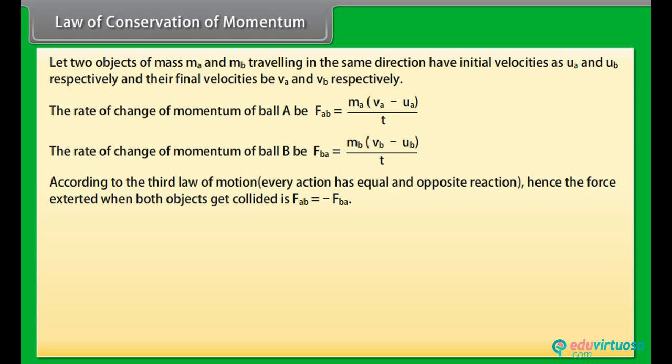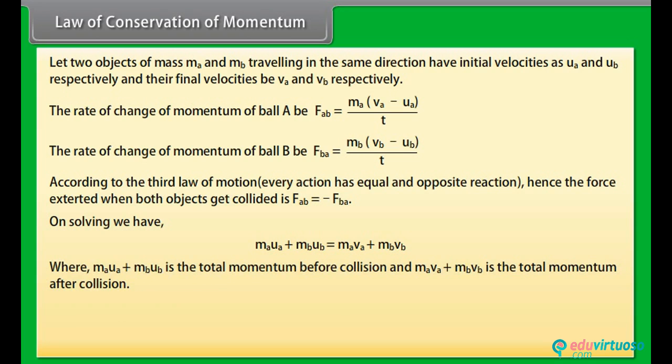According to the third law of motion, every action has equal and opposite reaction. Hence the force exerted when both objects get coiled is Fab = -Fba. On solving we have ma·ua + mb·ub = ma·va + mb·vb, where ma·ua + mb·ub is the total momentum before collision and ma·va + mb·vb is the total momentum after collision.